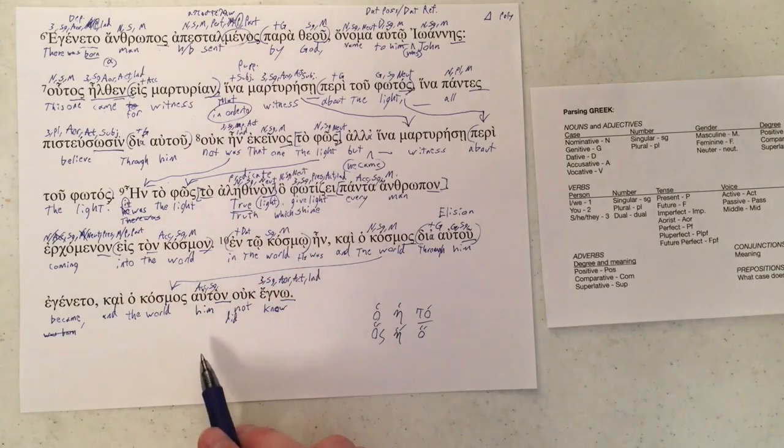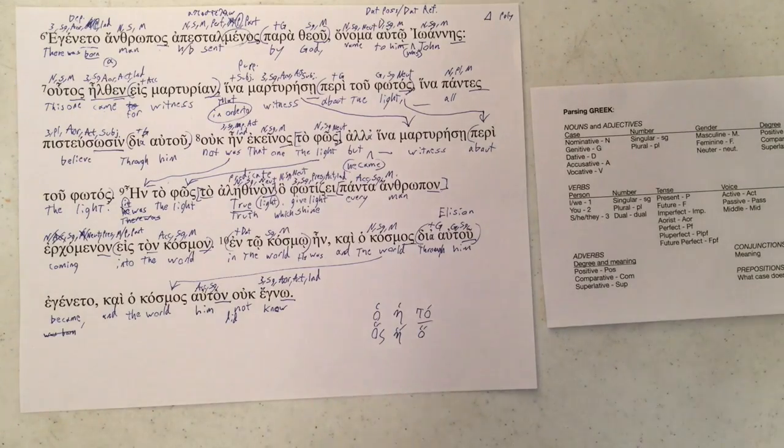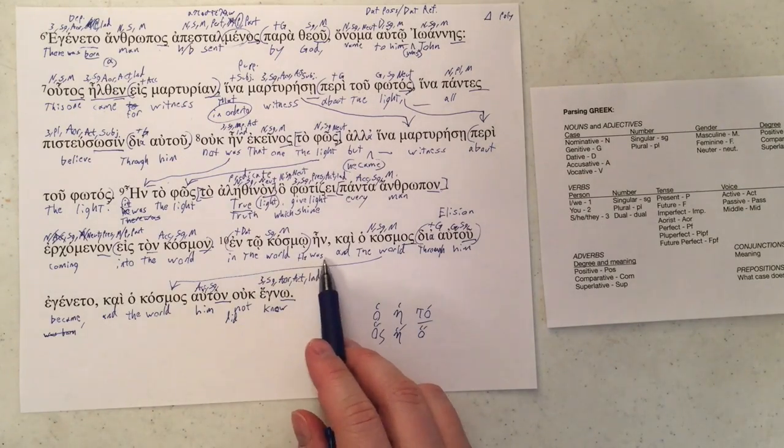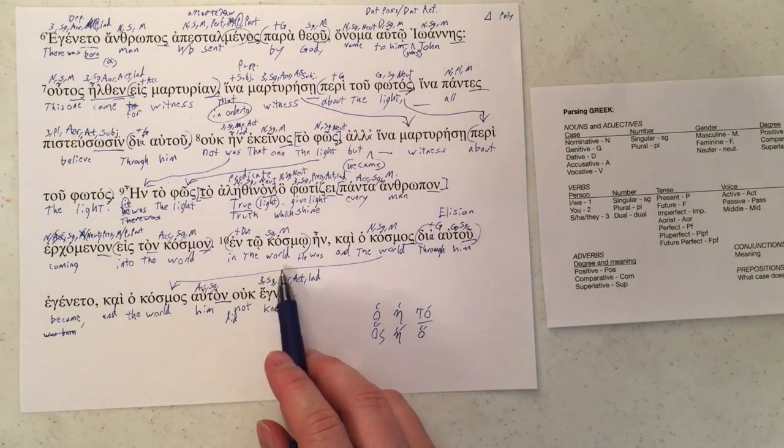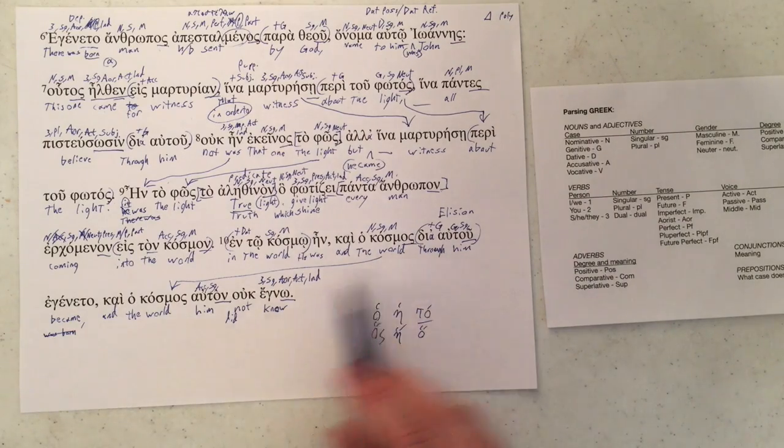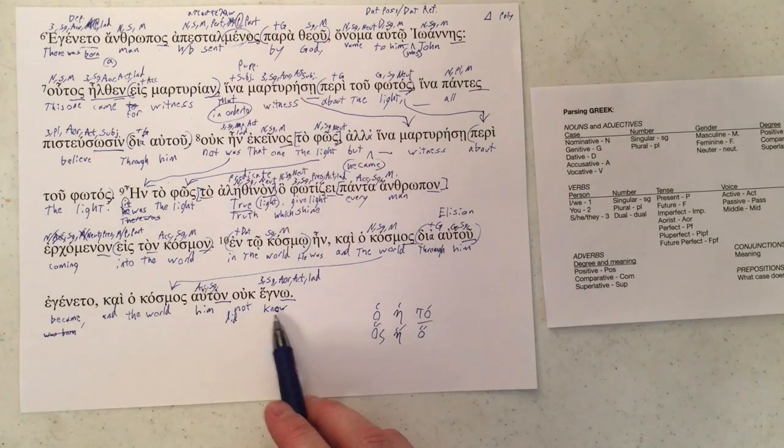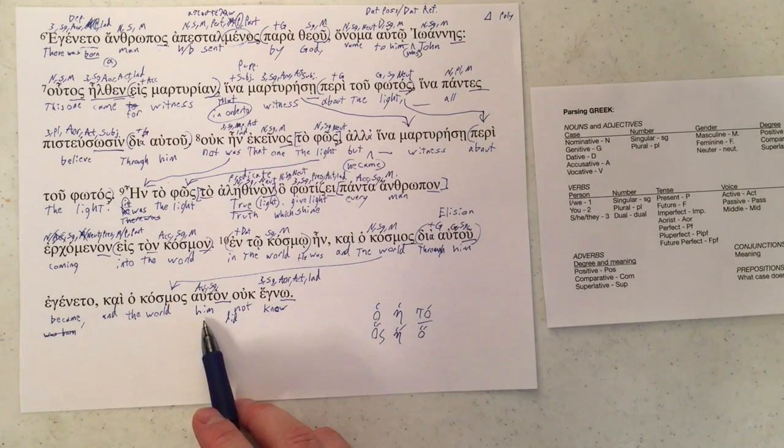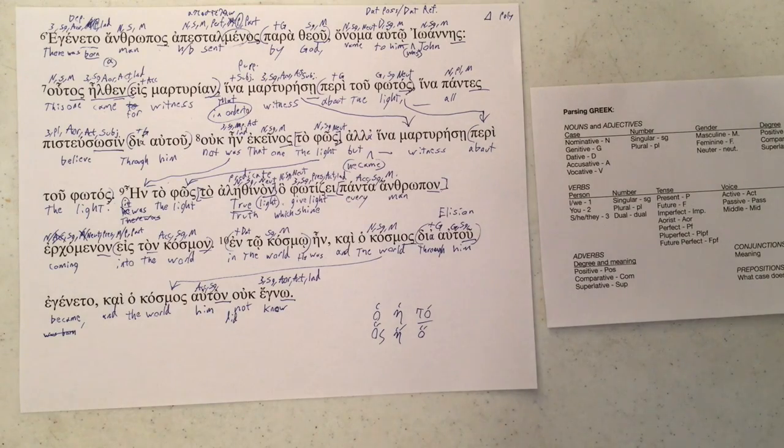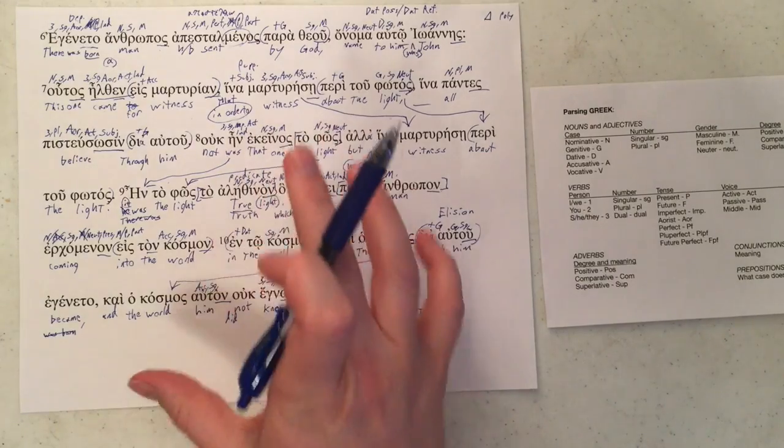All right, so we've got all of our words here in this verse, and we can go ahead and take a look at what our full translation is. Okay, he was in the world, and the world through him became, and the world did not know him. All right, so reading that aloud in English it makes a lot of sense, so that's our first test against whether or not a sentence has been translated correctly, so passes, which is good. This ends this page.